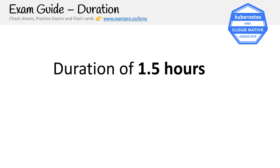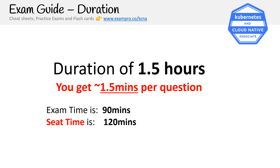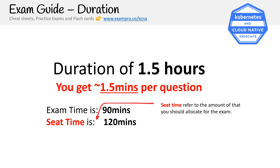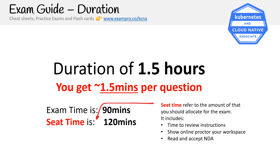The exam duration is 1.5 hours — that's 90 minutes. Your seat time would be 120 minutes. Seat time refers to the total time you should allocate, not just the exam itself — it includes reviewing instructions, showing the online proctor your workspace, reading and accepting the NDA, completing the exam, and providing feedback at the end. Online check-in is super stressful: they might not like your ID, make you check the whole room again, flag a lighting issue, or say your photo is blurry. Make sure you have ample time. Sometimes they start the exam early if you're ready.